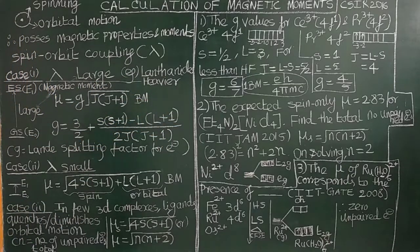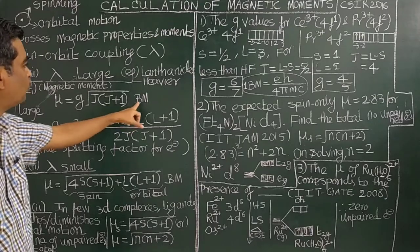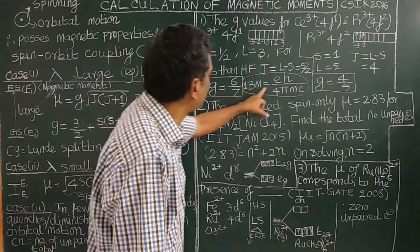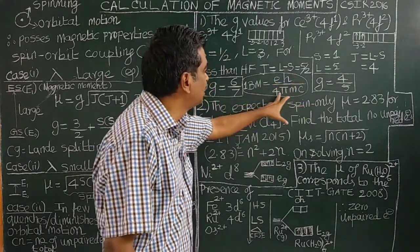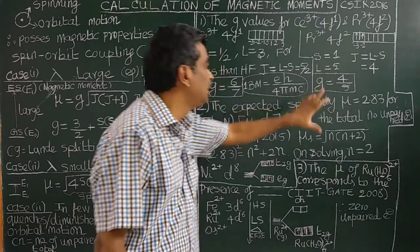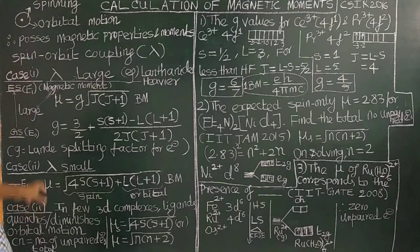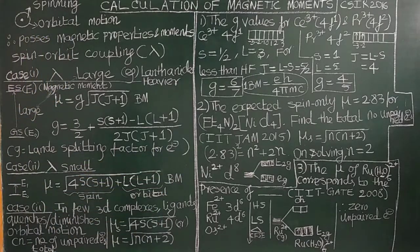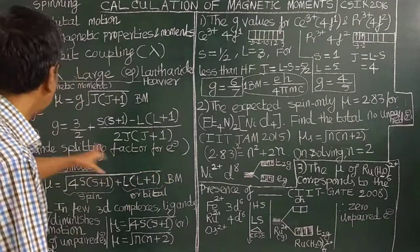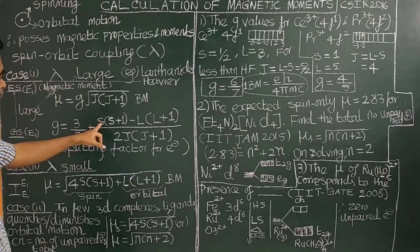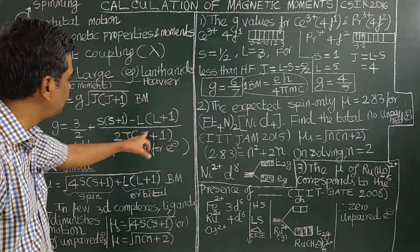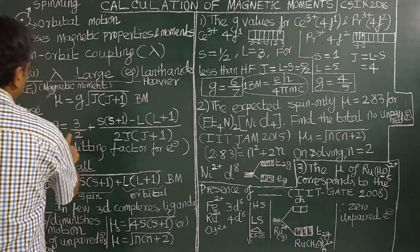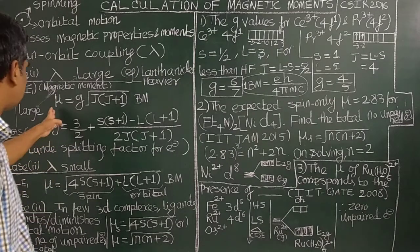The formula used to calculate the magnetic moment when lambda is large is: mu equals g times the square root of J(J+1) Bohr magnetons, where one Bohr magneton equals eħ/4πmc. Here e is the electronic charge, ħ is Planck's constant, m is the mass of the electron, and c is the velocity of light. G is called the Landé splitting factor for electrons, equal to 3/2 plus [S(S+1) − L(L+1)] / [2J(J+1)].